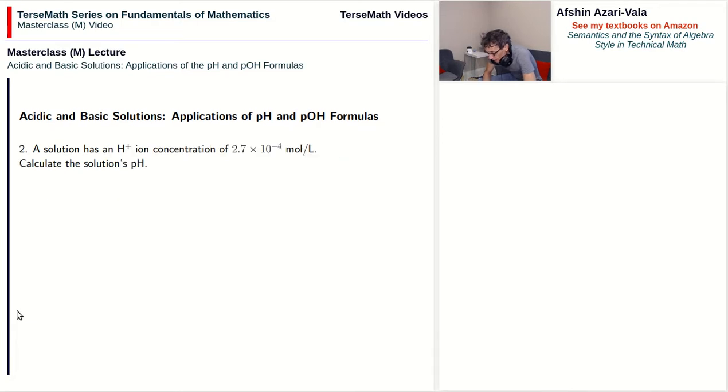Problem two. Now this goes the other way. A solution has an H plus ion concentration of 2.7 times 10 to the power of negative 4 moles per liter. Calculate the solution's pH.